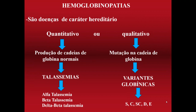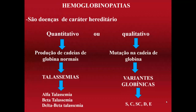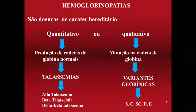A talassemia é uma anemia caracterizada por diminuição dessas cadeias de globina. É um grupo homogêneo de doenças, todas genéticas, de caráter hereditário, que vão afetar a cadeia acometida. Por exemplo, alfa-talassemia quando há alterações na cadeia alfa, beta-talassemia quando há problemas na quantidade de cadeia beta — que vai ser substituída pela alfa, e vice-versa.